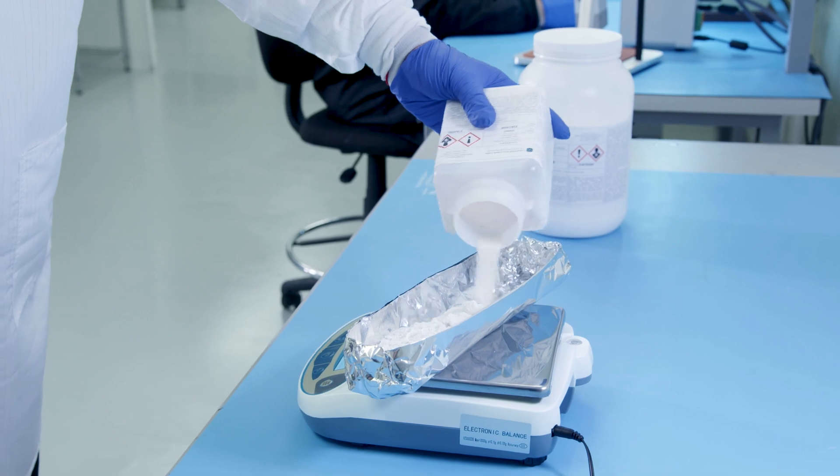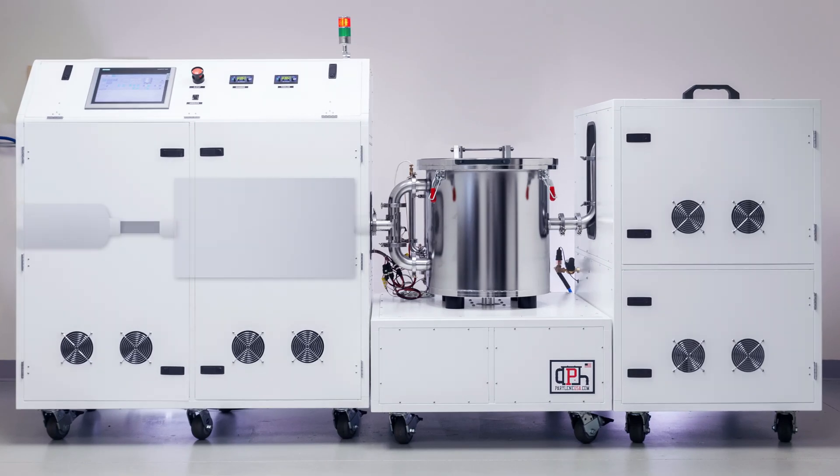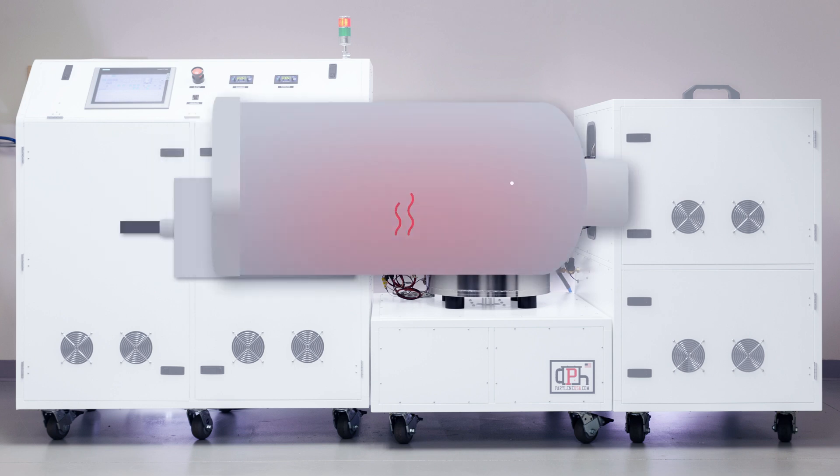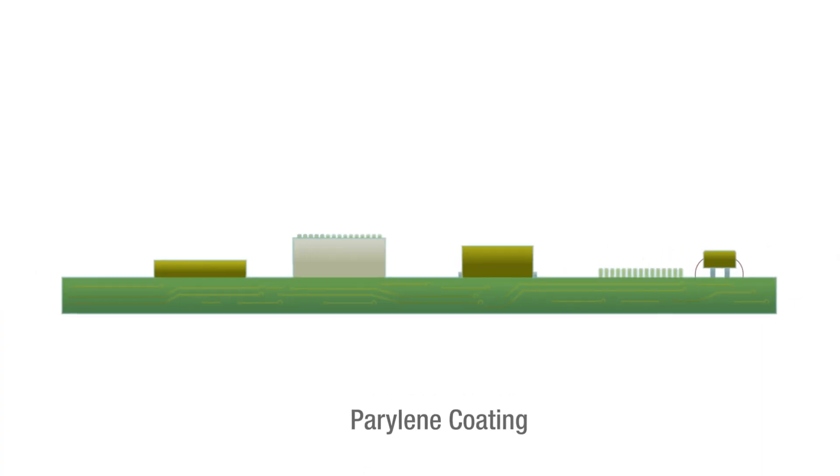Parylene uses a chemical vapor deposition process to heat the dimer within a vacuum system. The solid dimer, once heated within a CVD chamber, transforms to a gaseous state before fully encapsulating all exposed surfaces with deep penetrating precision like no other conformal coating.